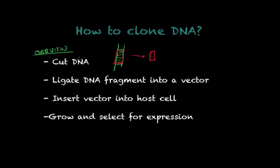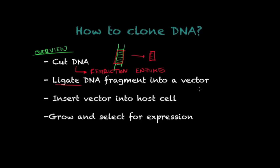To cut the DNA, you use restriction endonucleases — those are the scissors, the enzymes that will cut this DNA piece and separate it from the molecule. This is done by restriction enzymes. The second step is to take this fragment and ligate it into a vector.